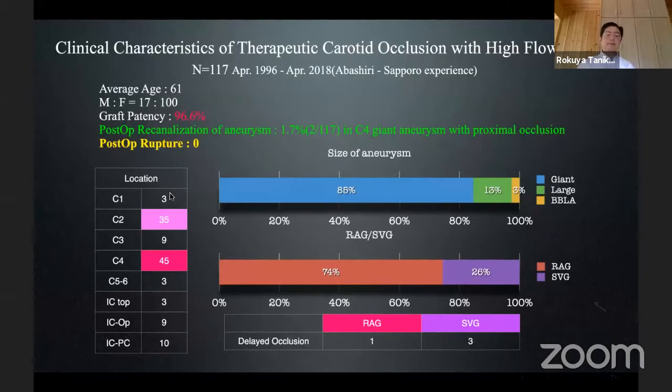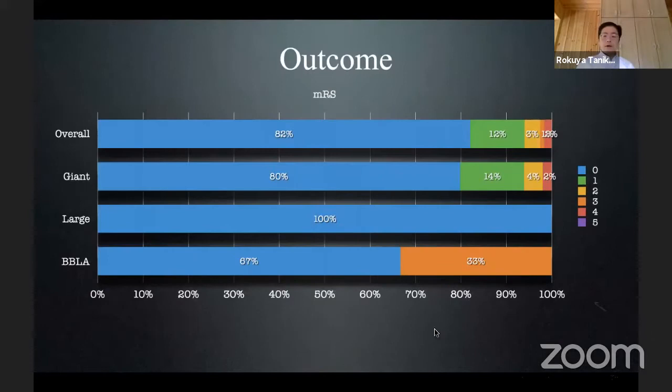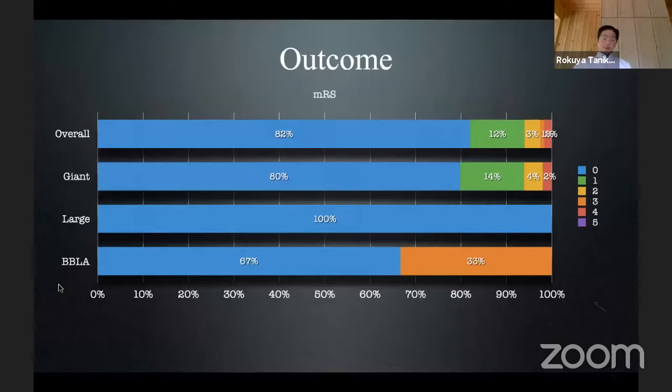I had no post-operative rupture after surgery. Overall outcome was excellent: modified Rankin Scale 0–2 in almost 95.6 percent. For giant aneurysms, almost the same. For lash aneurysms, 100 percent. Blood blister-like ruptured aneurysms: 67 percent were modified Rankin Scale 0.